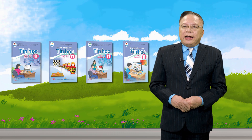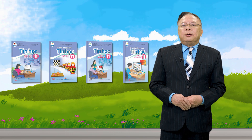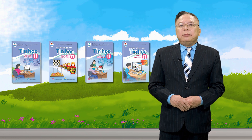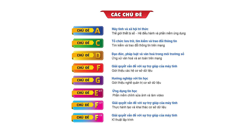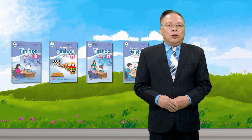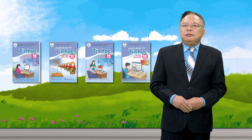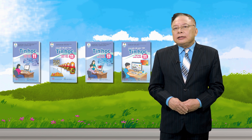Sách giáo khoa tin học 11 được tổ chức nội dung đảm bảo tính hệ thống. Với mỗi chủ đề, phân tích các yêu cầu cần đạt của chương trình 2018 theo cách xuyên suốt, biết lớp 10 và các lớp dưới đã học gì, lớp 12 sẽ học gì. Các tác giả đề cập những nội dung kiến thức, kỹ năng cần thiết và phân bổ vào các bài học của chủ đề hợp logic. Nội dung mỗi bài học được tổ chức phù hợp với quá trình nhận thức của học sinh.